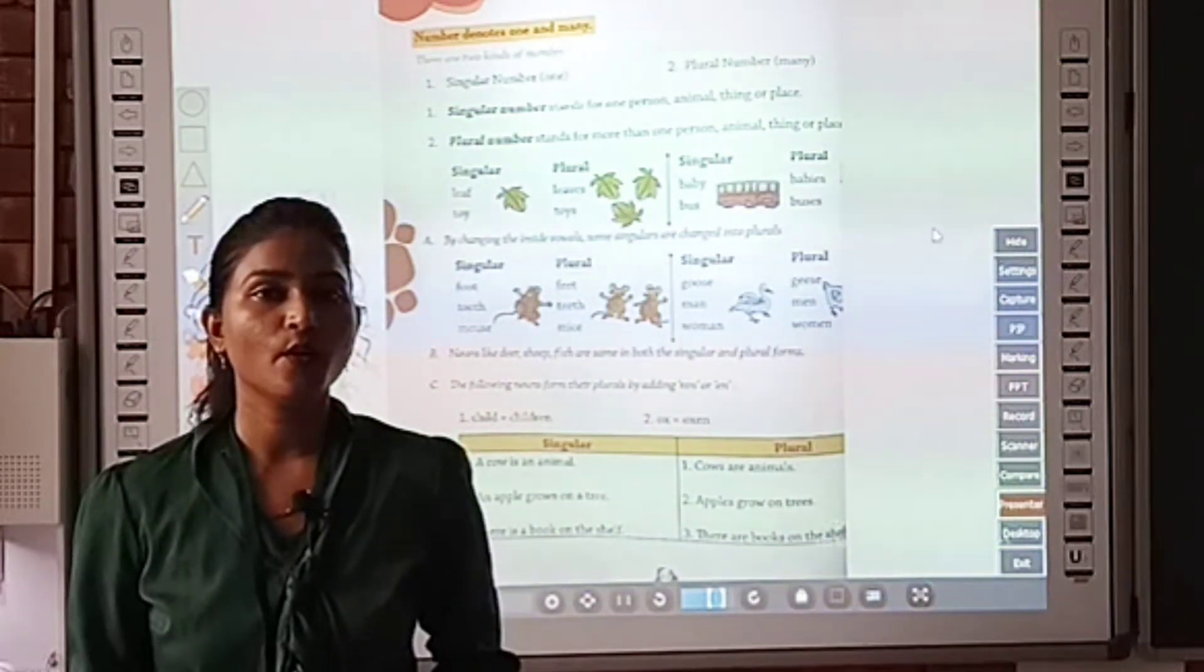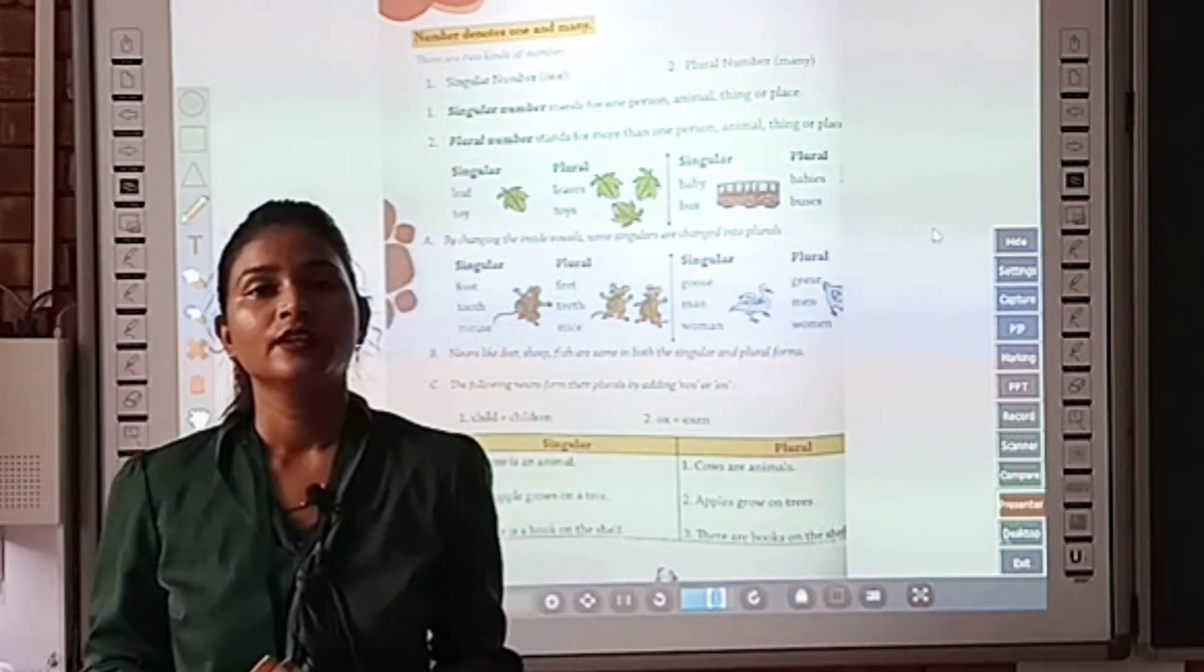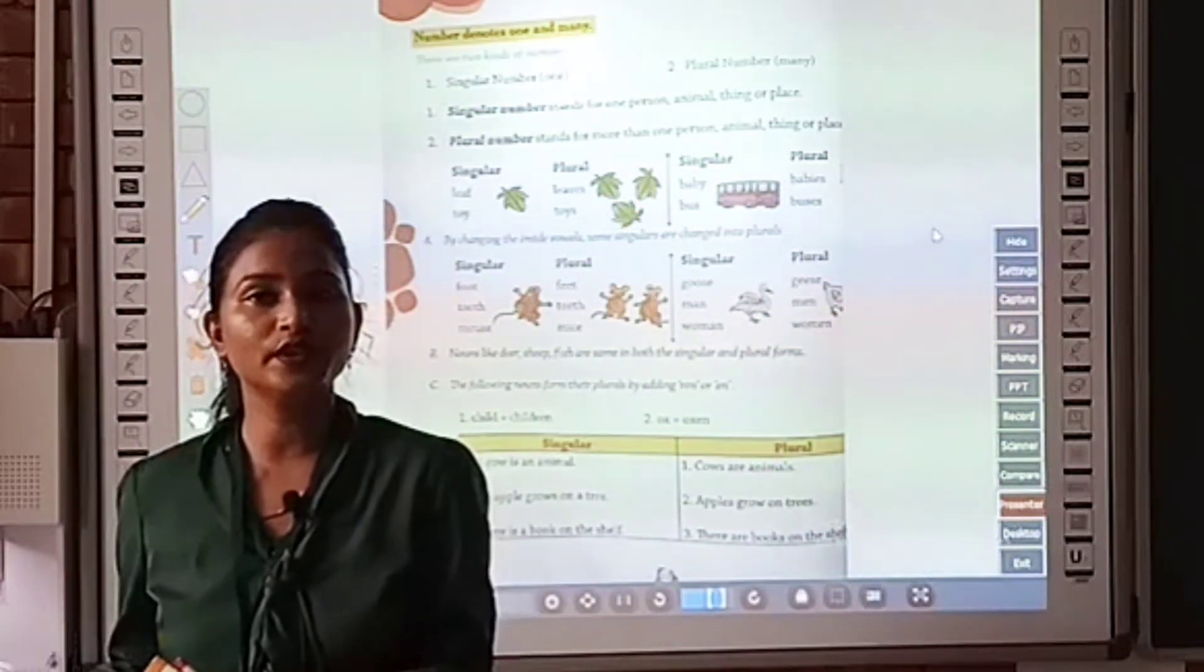So children, what is number? Number denotes one and many. Nouns can be singular number and plural number.